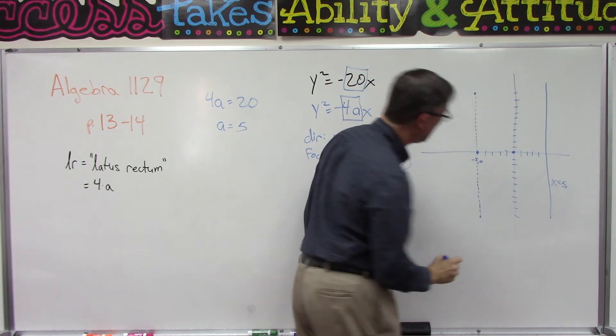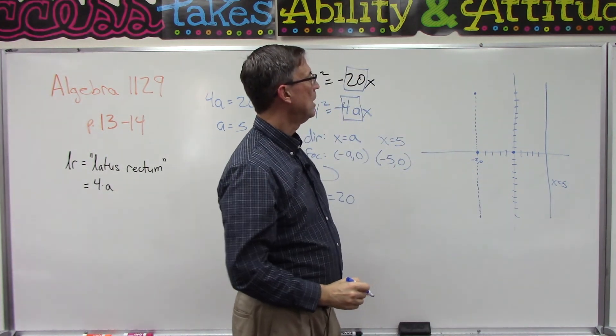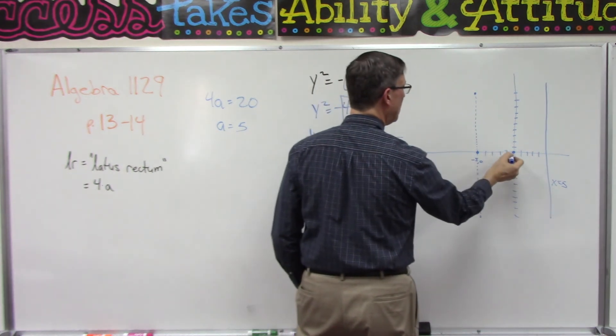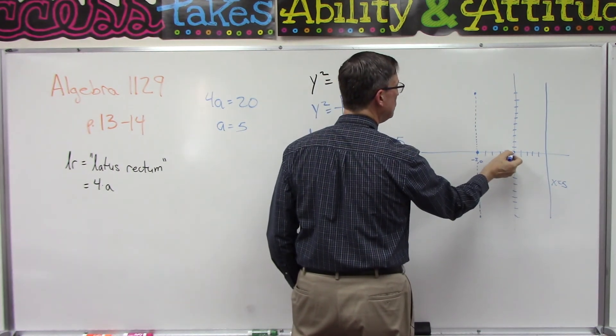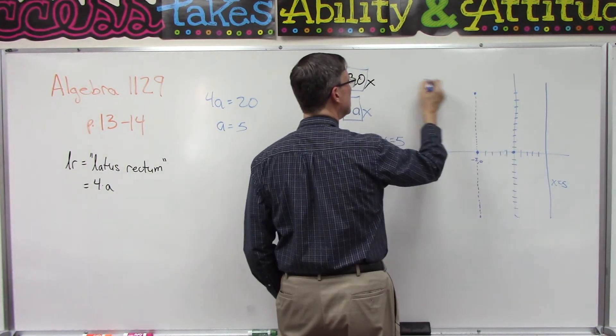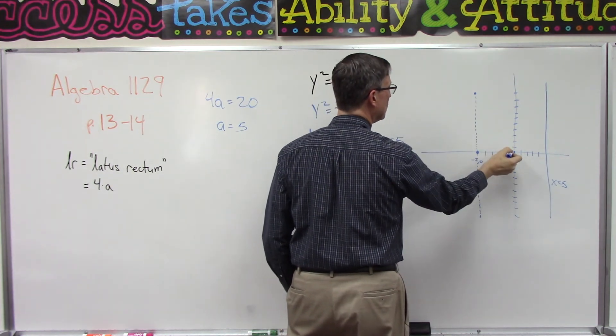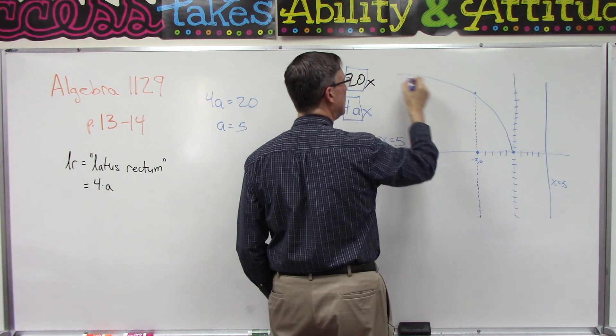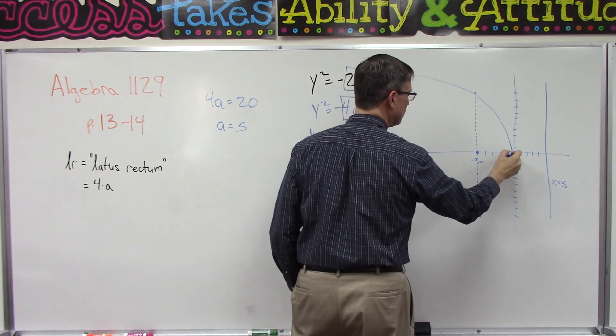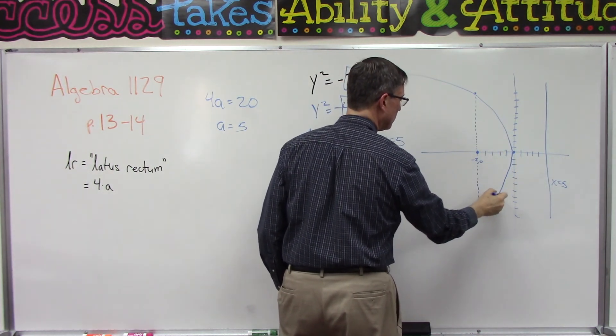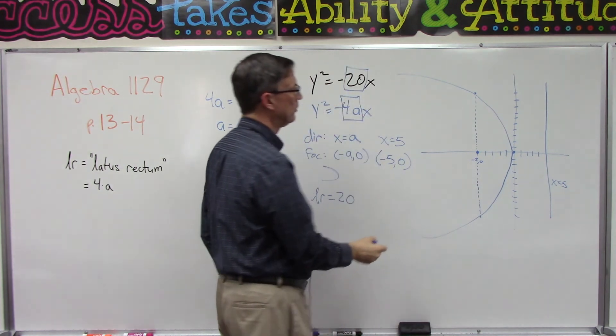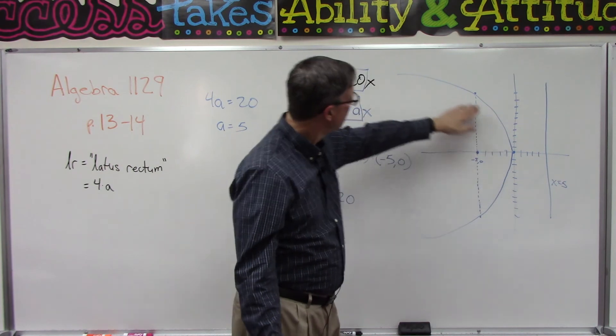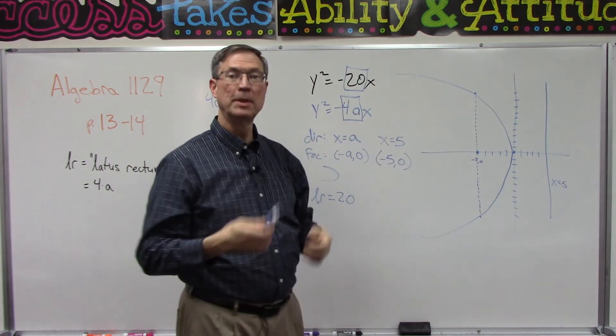That would be the latus rectum line, and now it's just a matter of doing a smooth connection where it should be curved. It starts here, curves through there and out. It comes from here, curves through here and goes out. It should be a smooth curve and then spread out from there.